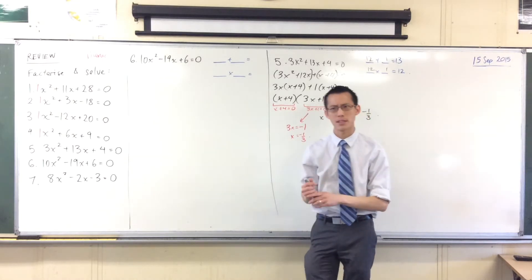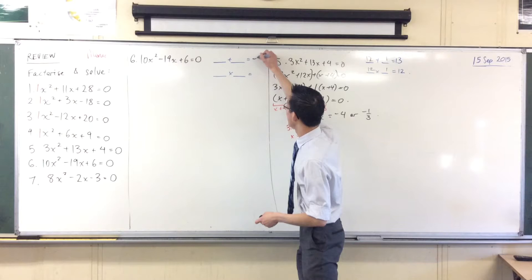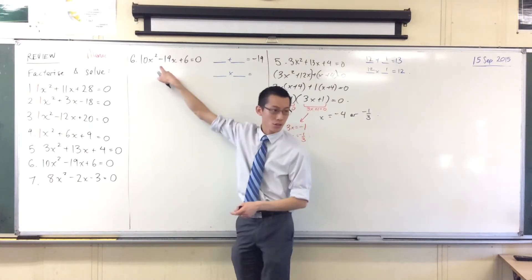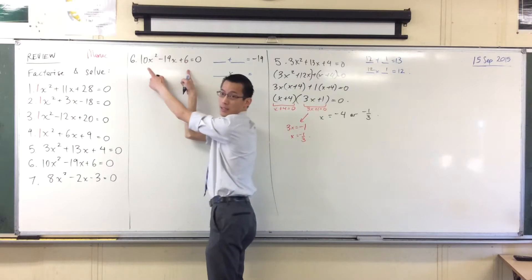What are they going to add to this particular question? Yeah, negative 19. There we go. There's that number in the middle and the pair of numbers want to multiply to 60, 6 times 10.